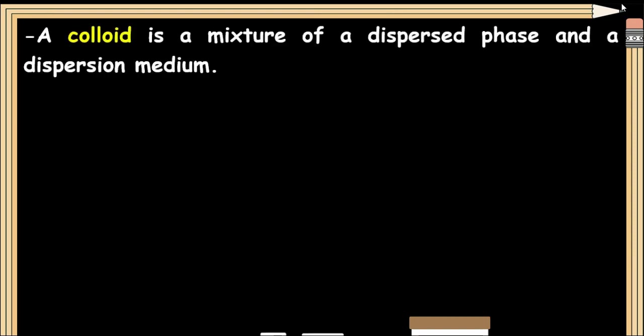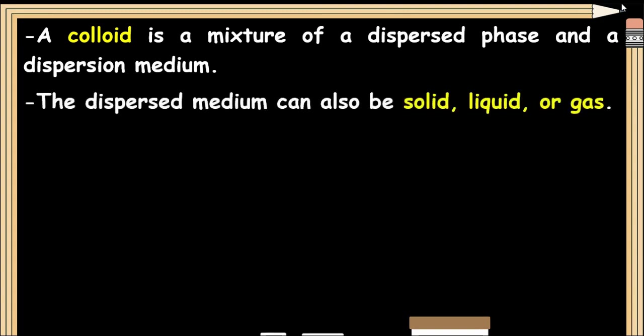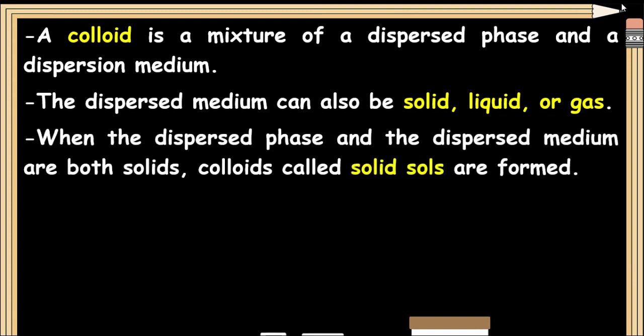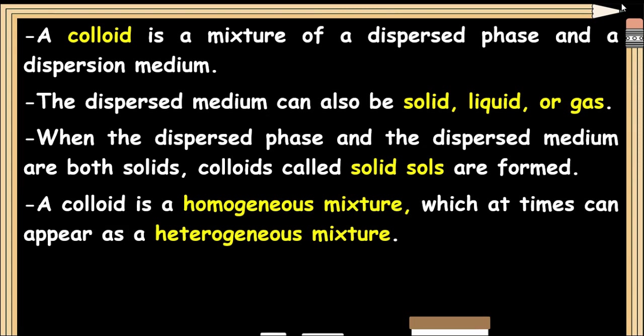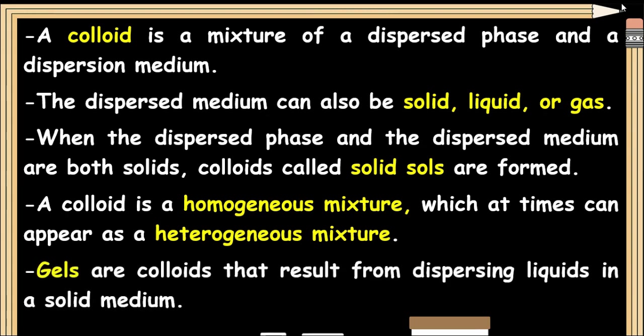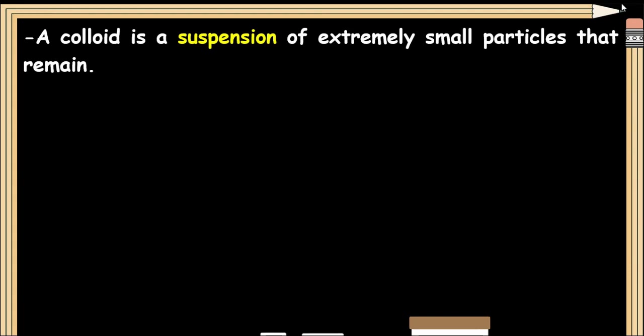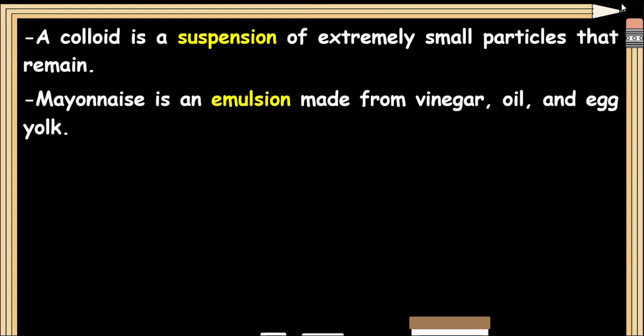A colloid is a mixture of a dispersed phase and a dispersion medium. The dispersing medium can be solid, liquid, or gas. When both the dispersed phase and the dispersing medium are solid, solid colloids called solid sols are formed. Mayonnaise is an emulsion made from vinegar, oil, and egg yolk.